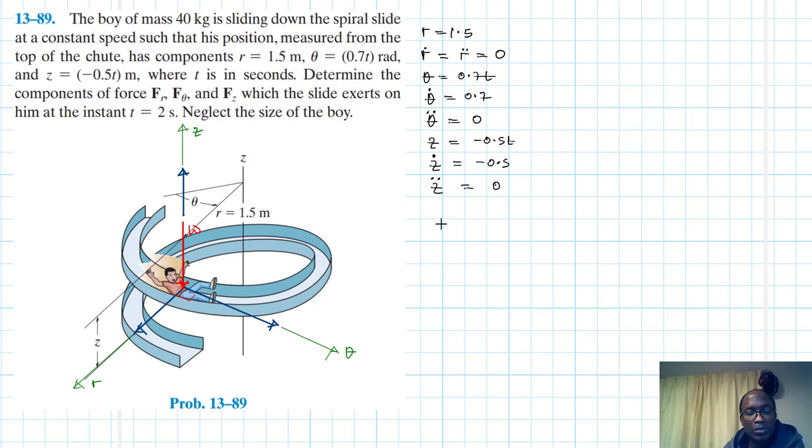So we've calculated all these inputs. Let's find the value of a r. A r is equal to r double dot minus r theta dot squared. Therefore, a r is just going to be equal to minus r times theta dot squared, which is minus 1.5 times (0.7)² squared. So we have 1.5 times 0.7² squared. This becomes minus 0.735.